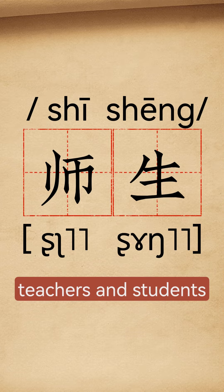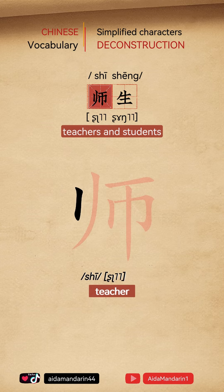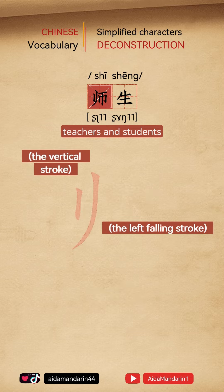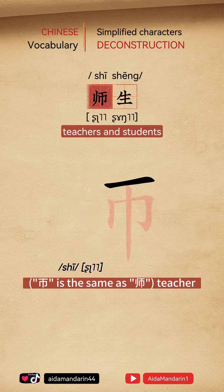The character 师生 (teachers and students) has a left-right structure and can be deconstructed into two parts. The left part is not a radical or a character, but two strokes: the vertical stroke and the left falling stroke. The right part means teacher.